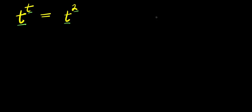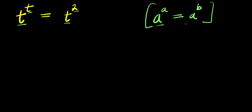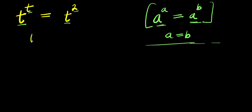Look at it here. If you have a to the power of a, and this equals a to the power of b, there is an identity that says when the bases are the same, you compare the exponents, meaning a equals b, because the bases are the same. So going by this particular identity, that means we can say that t equals 2.